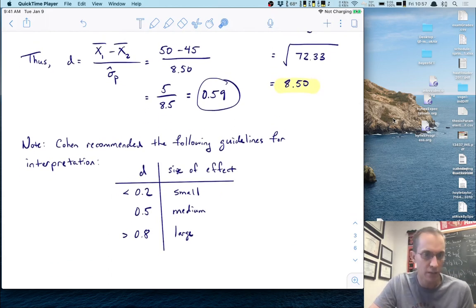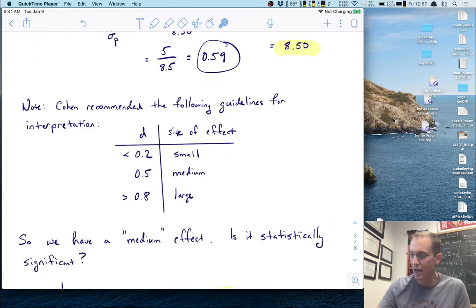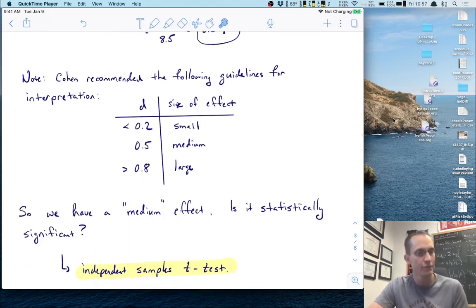Cohen himself recommended the following guidelines for interpretation: if d is less than 0.2, we call this a small effect; around 0.5 would be a medium effect; and bigger than 0.8 we would call a large effect. For our effect of 0.59 we're going to call that a medium effect. These are just guidelines, no hard and fast rules, but they're very common in our field.